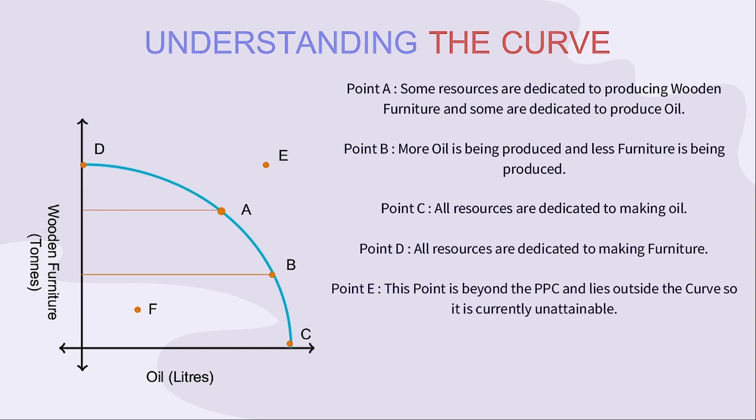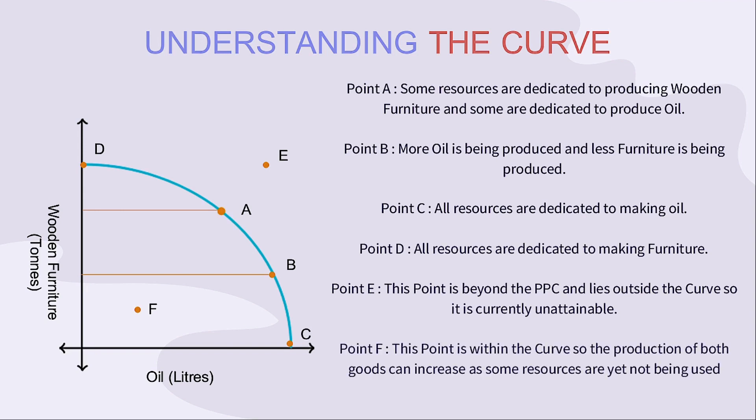Point E is beyond the PPC and lies outside the curve, so it is currently unattainable. Point F is within the curve, so the production of both goods can increase as some resources are yet not being used.